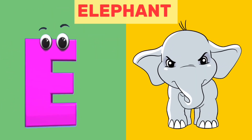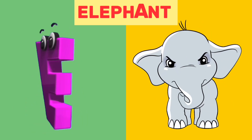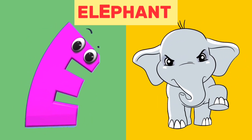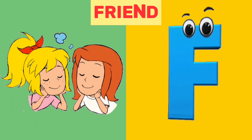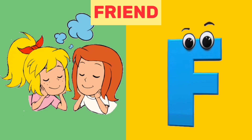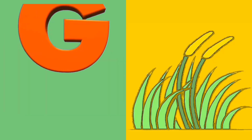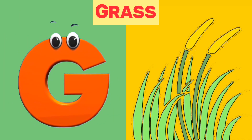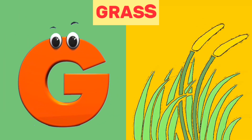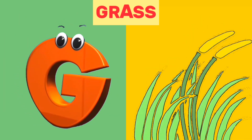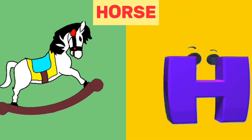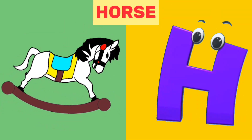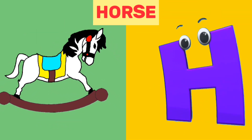E is for Elephant. E, E. Elephant. F is for Friend. F, F. Friend. G is for Grass. G, G. Grass. H is for Horse. H, H. Horse.